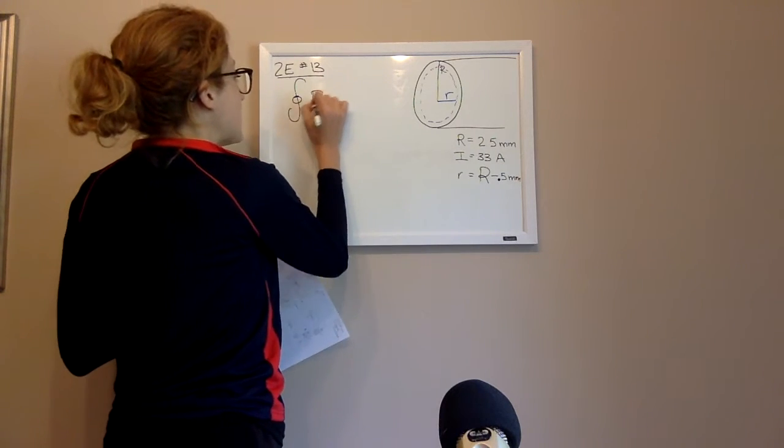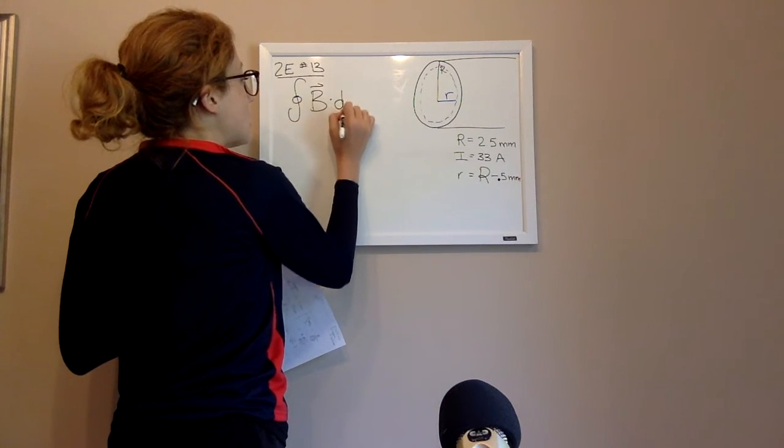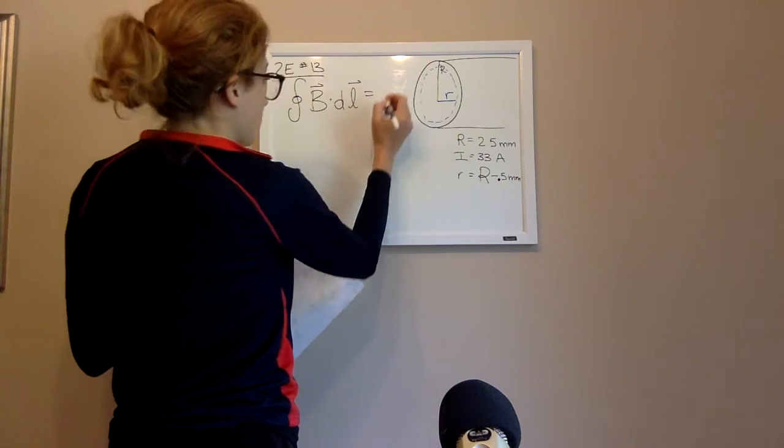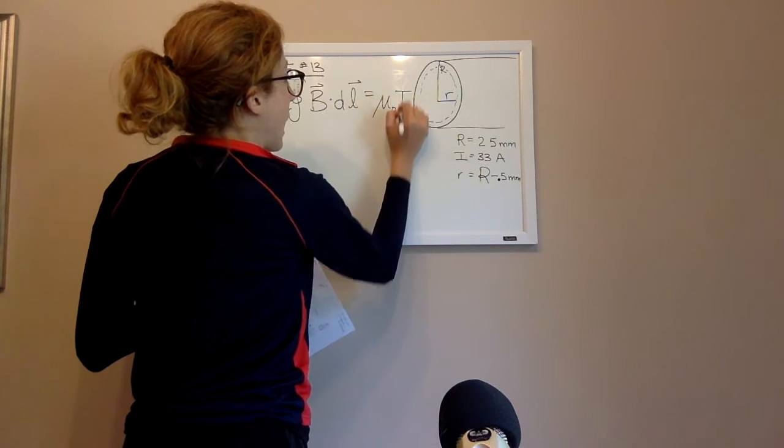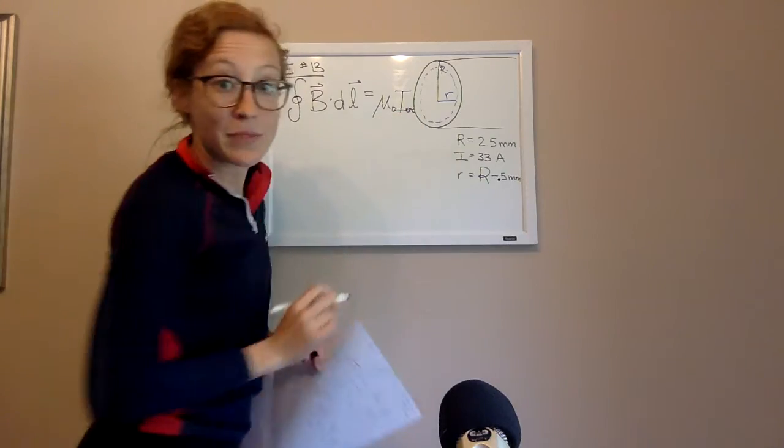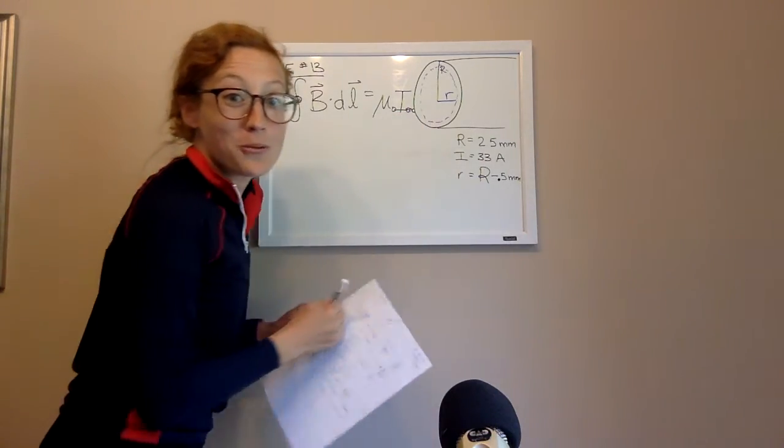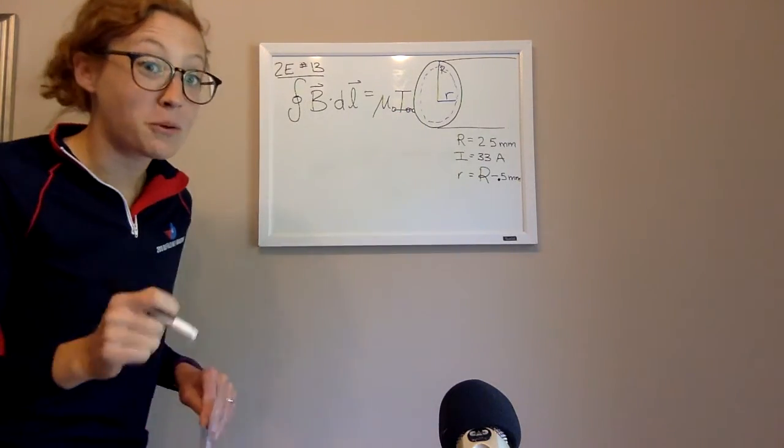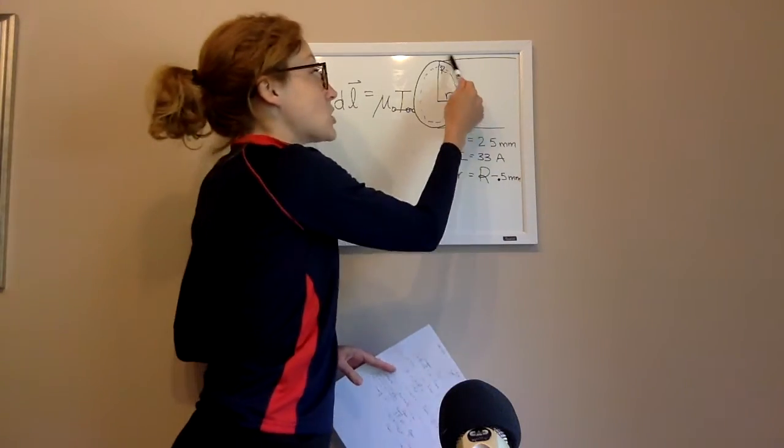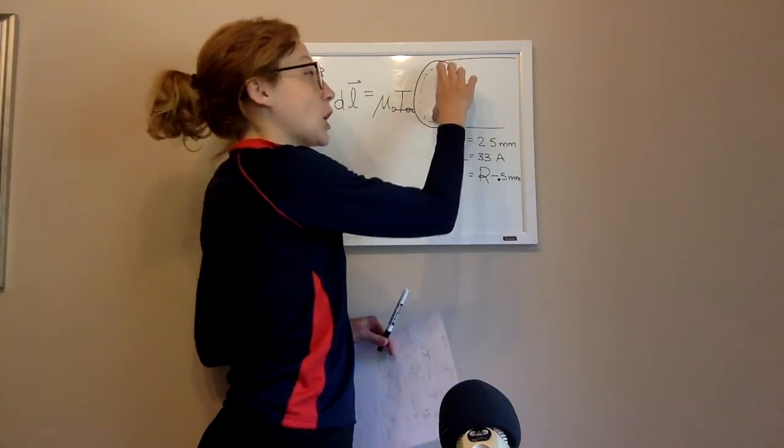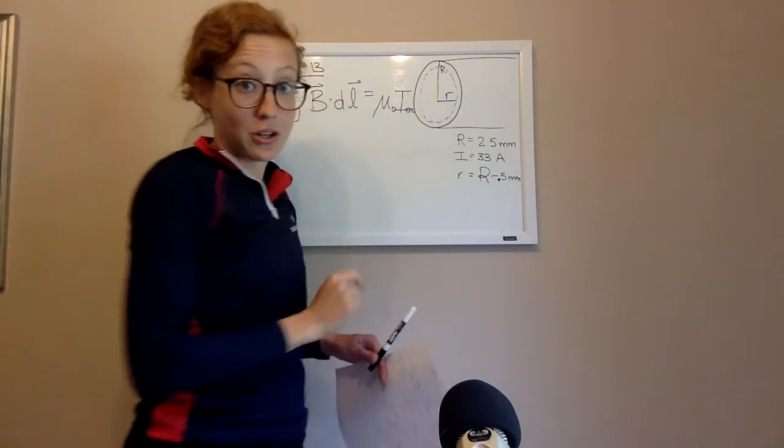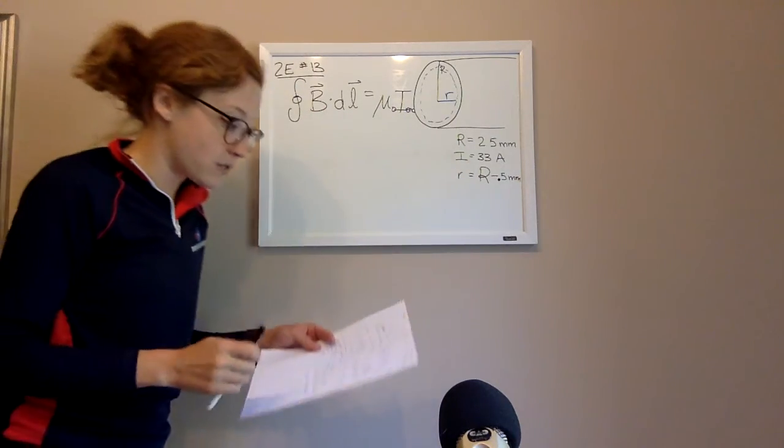So what is Ampere's Law? Ampere's Law is B dot DL is equal to mu naught I enclosed. So that enclosed, even though I wrote it really small to fit in on this board, is actually super important. So they don't want the entire current, they want just the current enclosed by that blue circle. So here's what we're going to have to do.